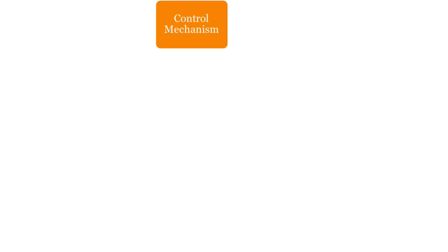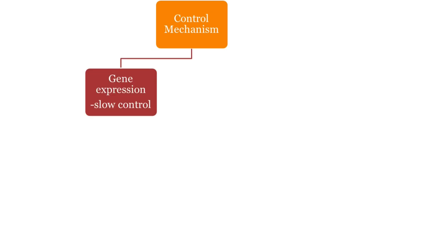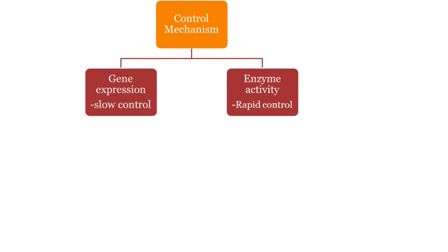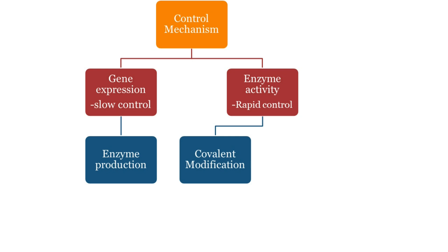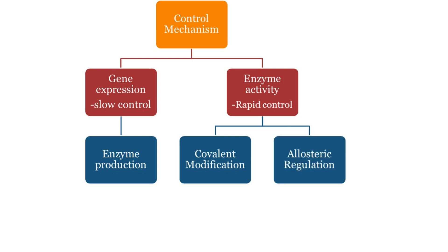There are two ways you can control the key regulatory enzymes in a metabolic pathway: either through gene expression or through enzyme activity. Controlling gene expression is a slow control method where you control the amount of enzyme that is produced. Enzyme activity, on the other hand, is a rapid control method which can be broken down into covalent modification and allosteric regulation.